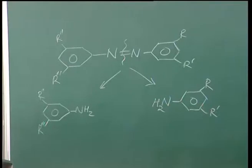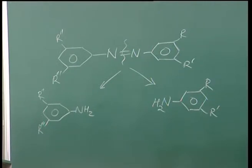Yesterday we saw that dye molecules are broken down by azo reductase. Today we compare that with oxidases. Azo reductases and oxidases are two different categories of enzymes — as the names suggest — but nevertheless, these enzymatic reactions are very fast compared to normal chemical reactions.